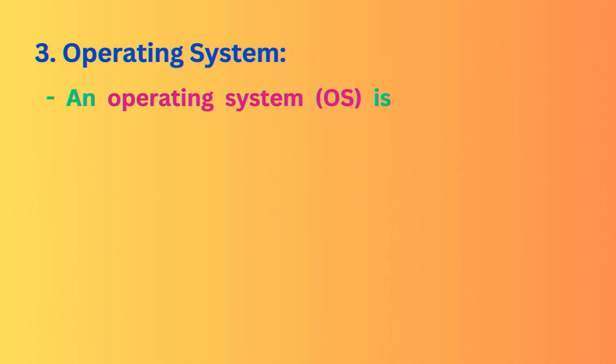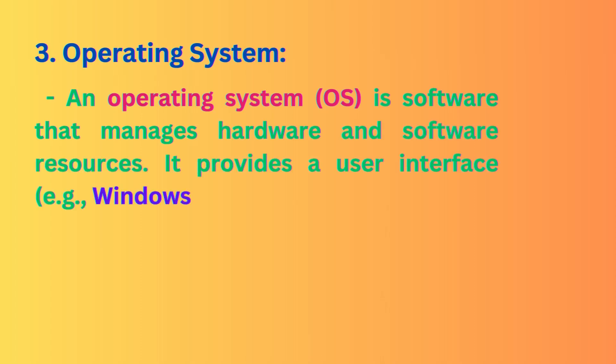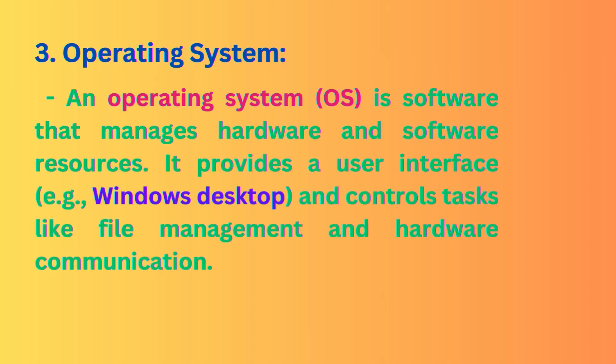Operating System. An operating system (OS) is software that manages hardware and software resources. It provides a user interface — for example, the Windows desktop — and controls tasks like file management and hardware communication.